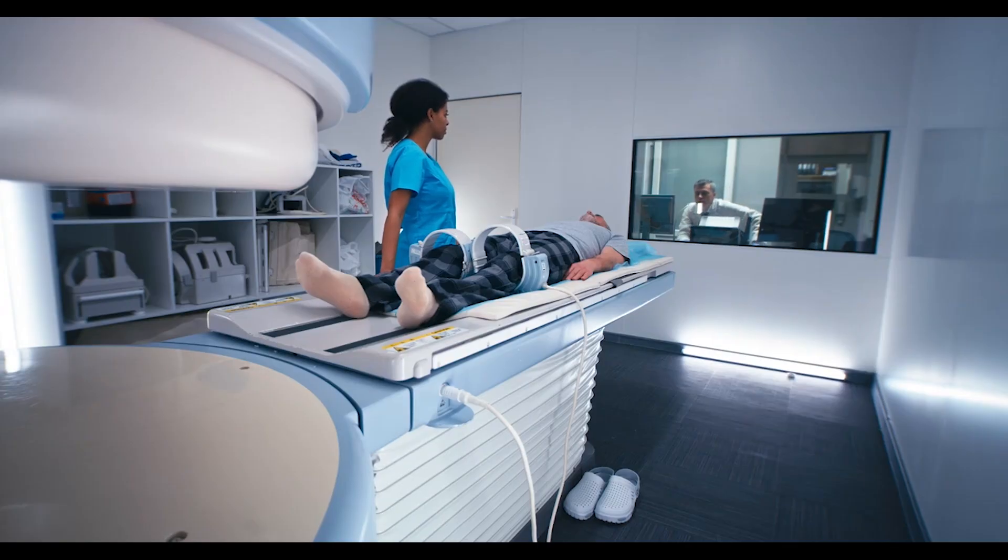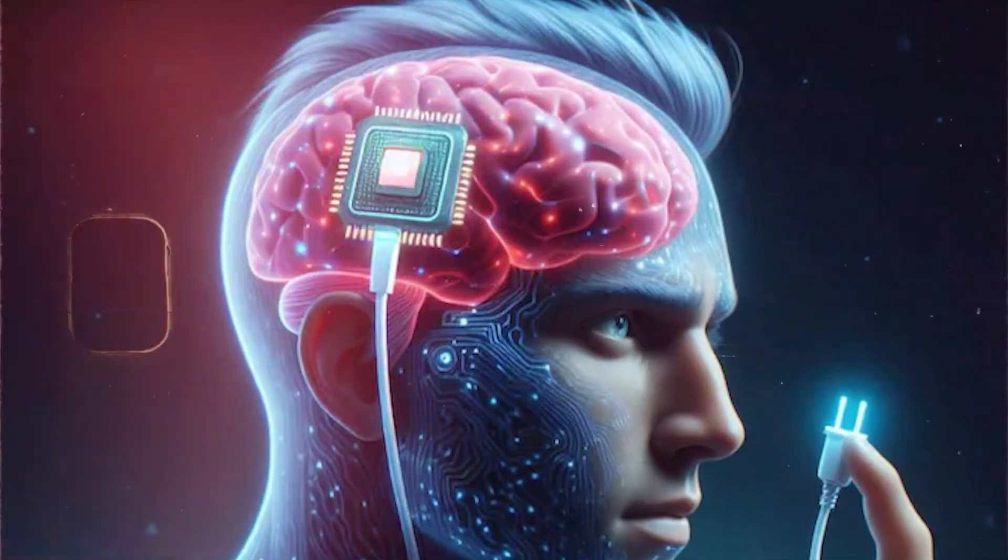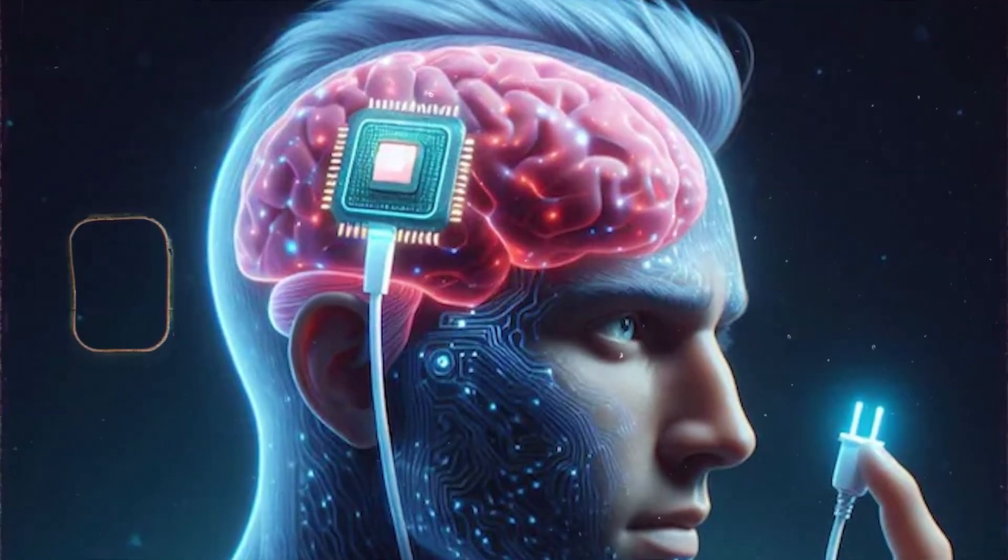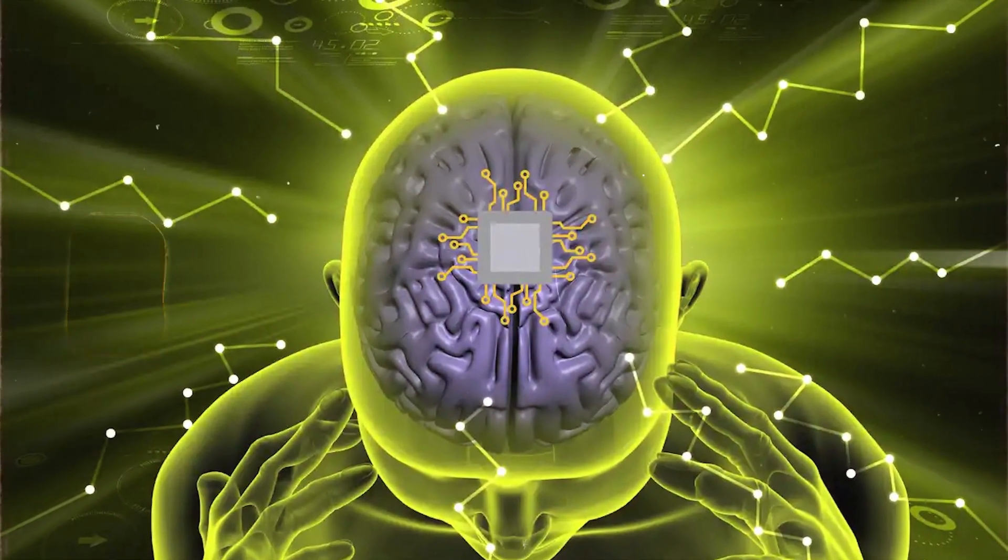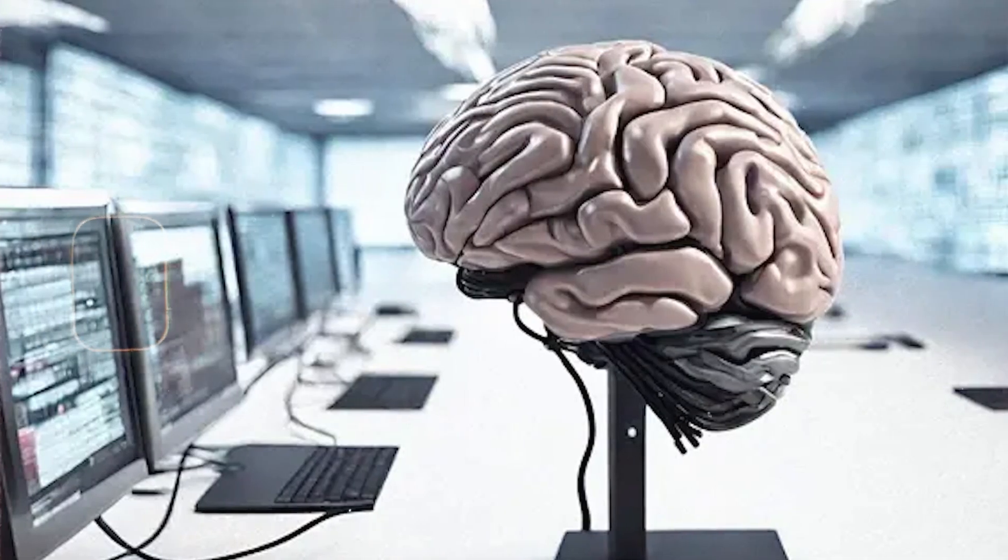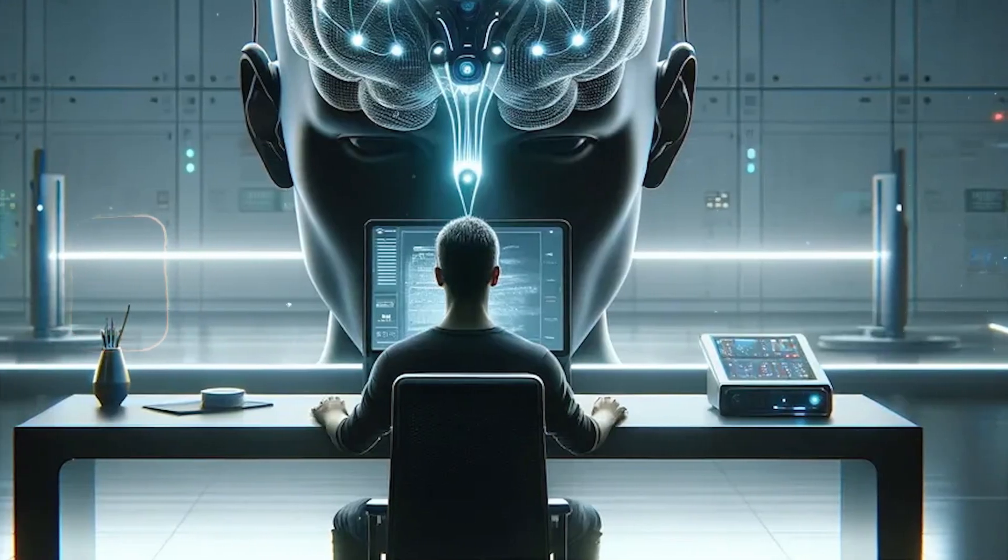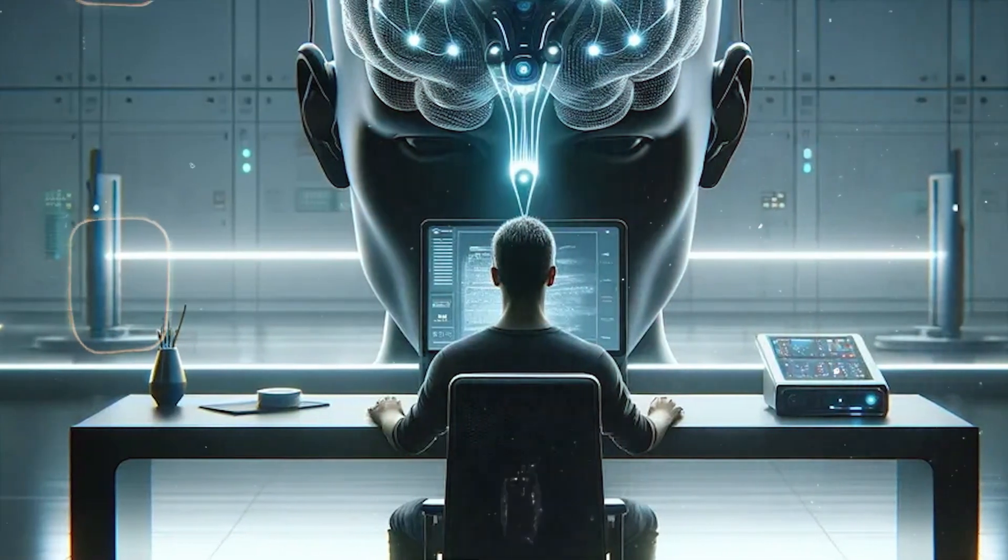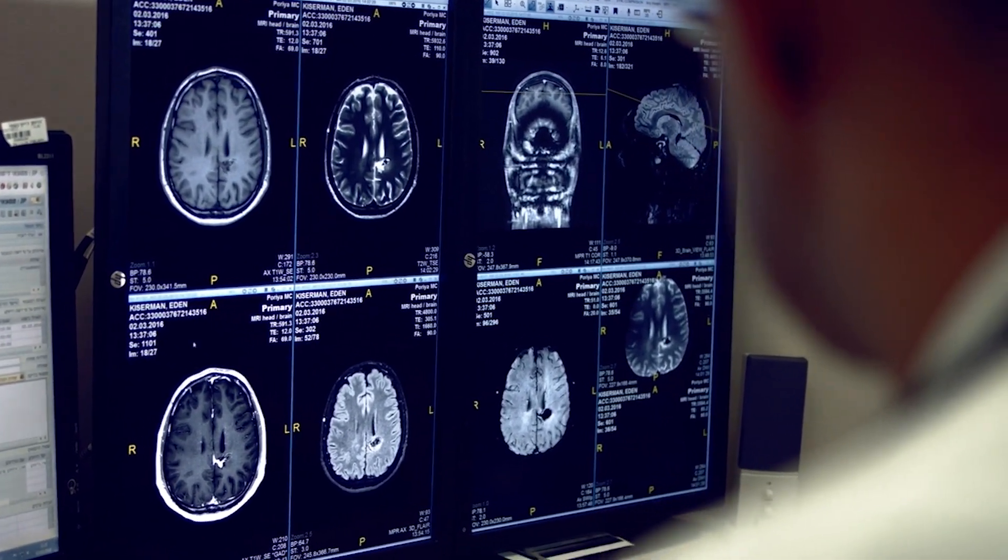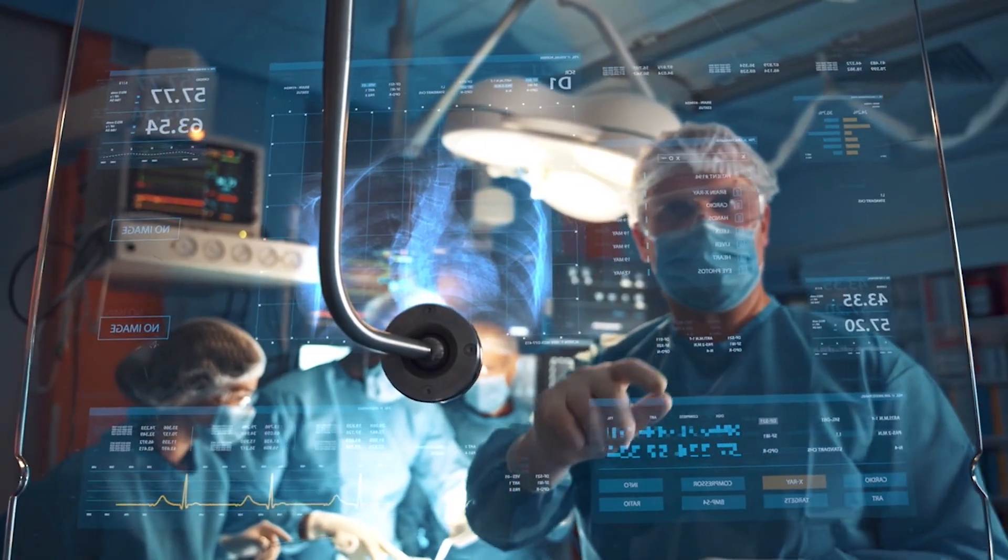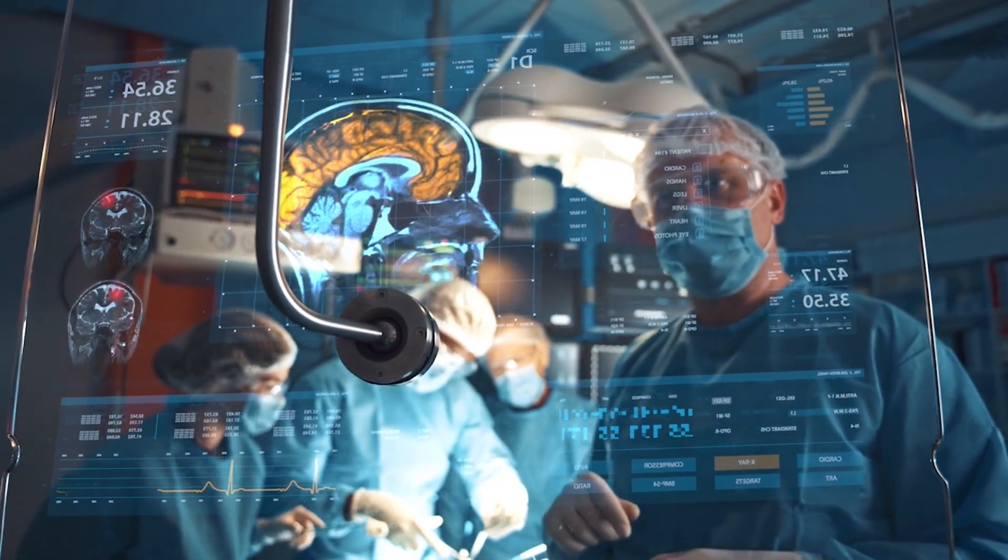But with such bold innovation comes serious risk. To insert the Neuralink chip, a piece of the skull must be removed so that ultra-thin threads, finer than a strand of hair, can be carefully implanted into brain tissue. Even though this delicate procedure is performed by a specially designed surgical robot, it is still brain surgery with all the associated risks: bleeding, infection, inflammation, or even long-term neurological damage.